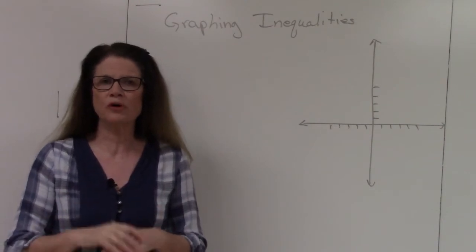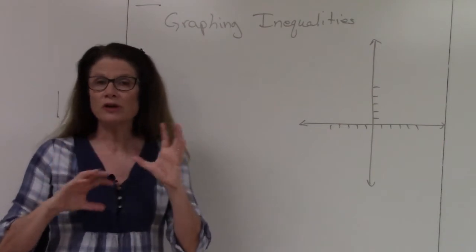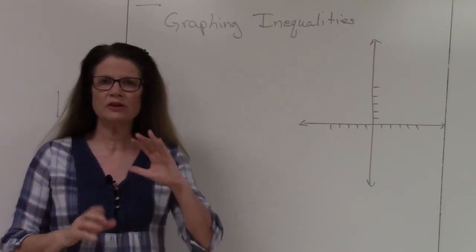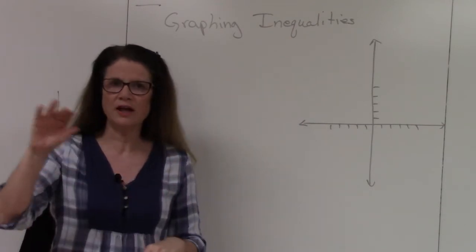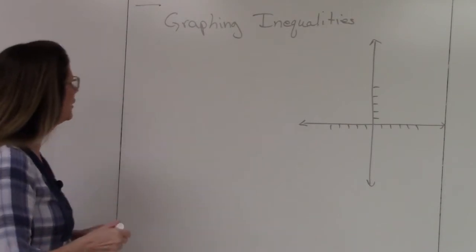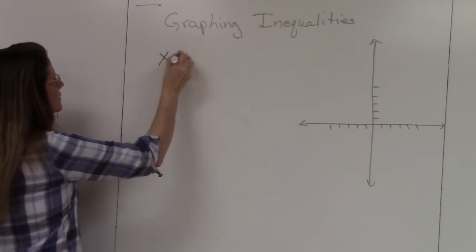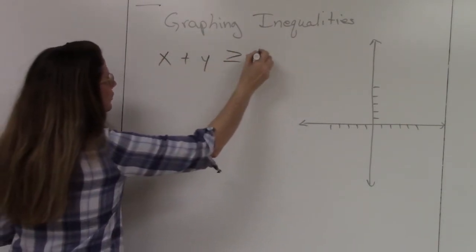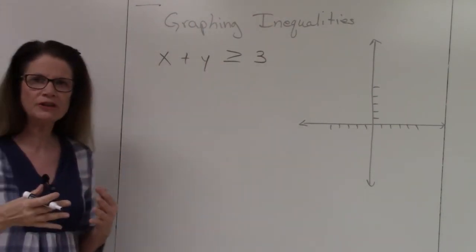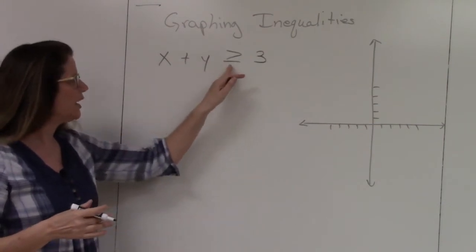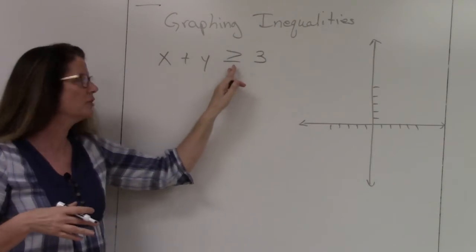There are three parts to a graph of an inequality: the part above the line, the part below the line, and the line itself. So if I have the inequality x plus y is greater than or equal to 3, we're going to graph it using the cover-up method, treating it as if it has an equal sign. The inequality does not come into play until later.